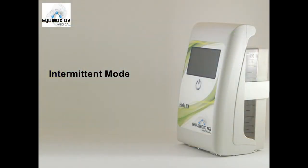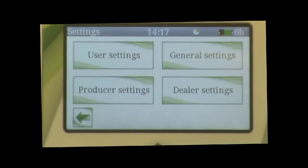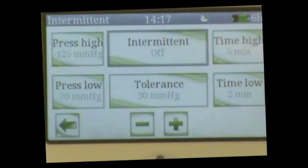Intermittent mode setup: Press the menu button, user setting, intermittent setting. Press the intermittent button and then the minus sign or plus sign to turn it on.